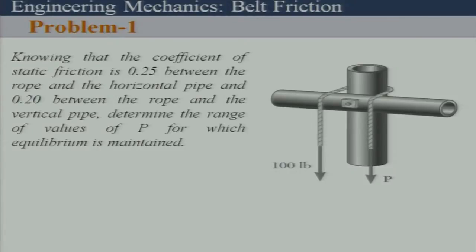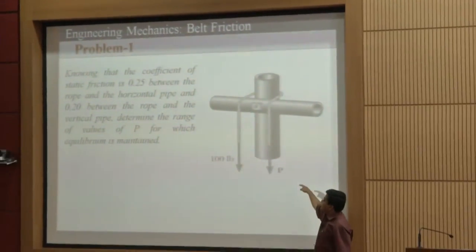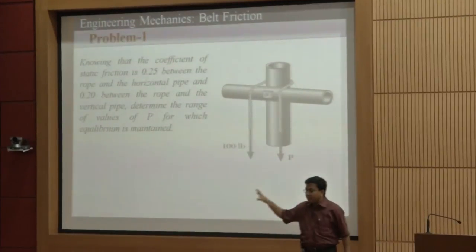Note that the coefficient of static friction is different between the rope and the horizontal pipe, and between the rope and the vertical pipe. We are trying to find the range of values of P for which equilibrium is maintained. P going down means impending motion downward, and impending motion upward — these are the two situations we have to look at.